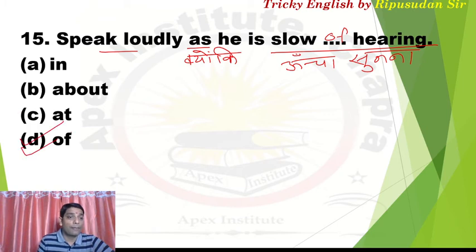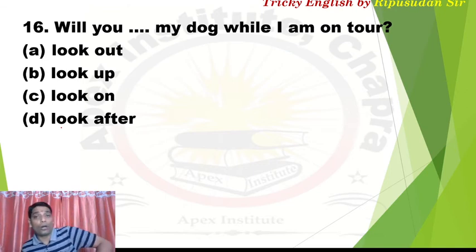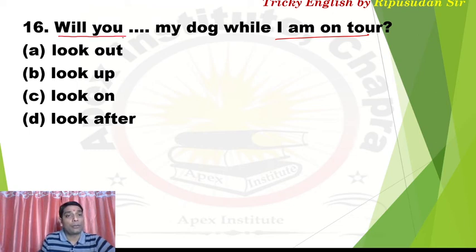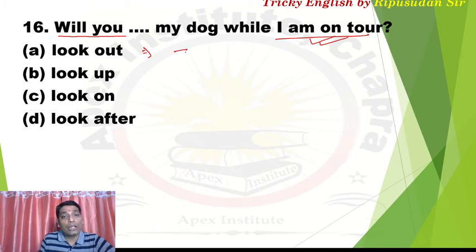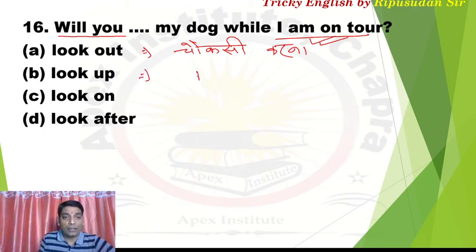Question 16: 'Will you dash my dog while I am on tour?' When I am on tour, will you dash my dog? Note: one side uses future tense, the other uses present structure. 'Look out' means to keep watch, to look around in all directions, to be vigilant, to keep surveillance. 'Look up' means to make progress, to improve.